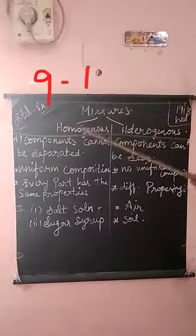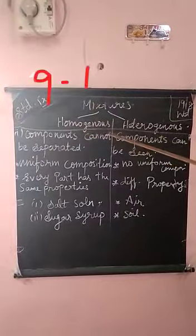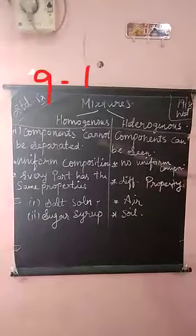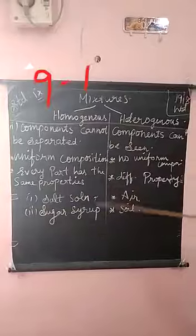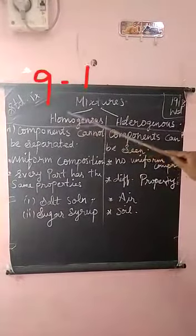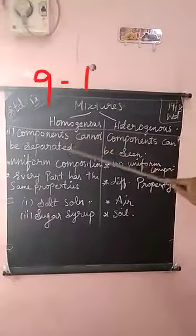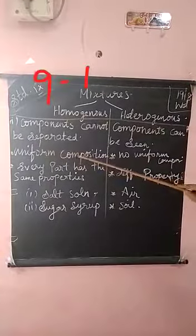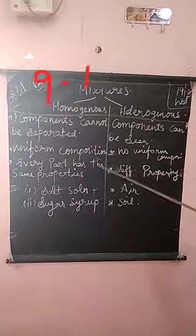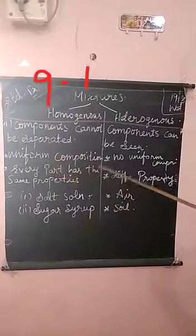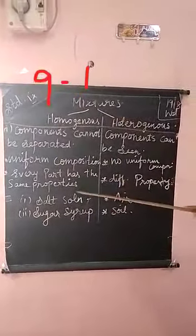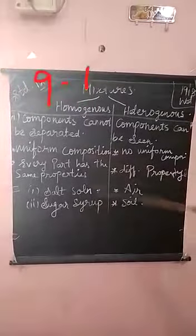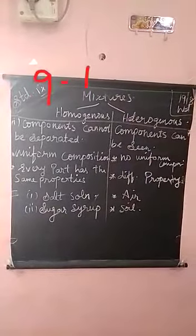In a salt and water mixture, the components cannot be separated — you cannot separate the salt and water molecules. So in homogeneous mixtures, the components cannot be separated and it seems to be uniform composition. Every part has the same property. Salt solution, sugar syrup — these are the examples for homogeneous mixtures.